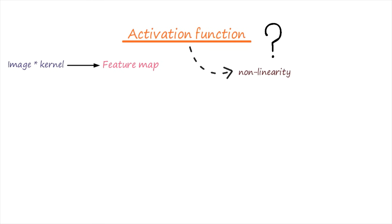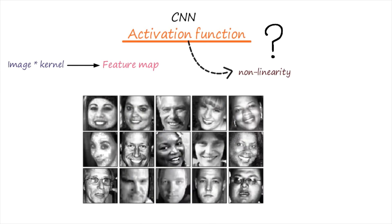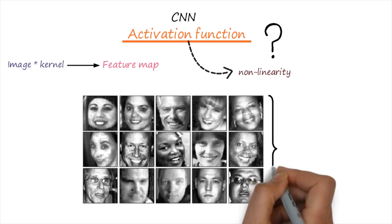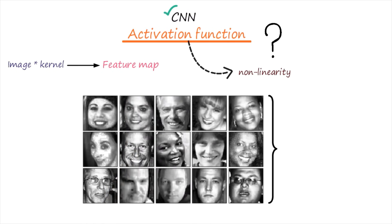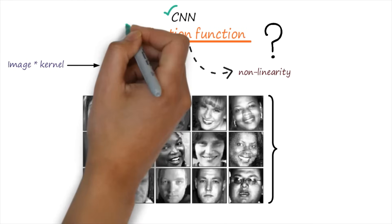What is the meaning of non-linearity and what is the usefulness of the activation function? Here is a simple example. We are working on CNN, and CNN only works on images. Let's consider a set of images of faces that need to be classified as smiling faces and non-smiling faces. I want to classify smiling and non-smiling faces using CNN. The CNN model will take raw pixel values of the image and apply certain steps to produce the classified output. But why do we need the activation function?